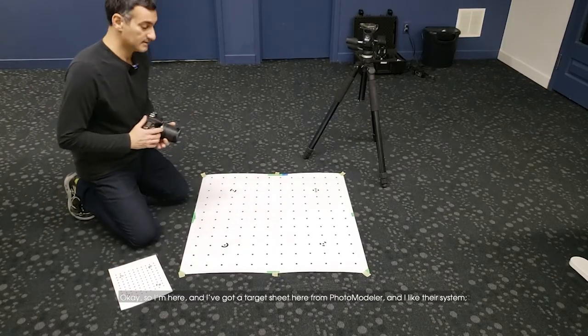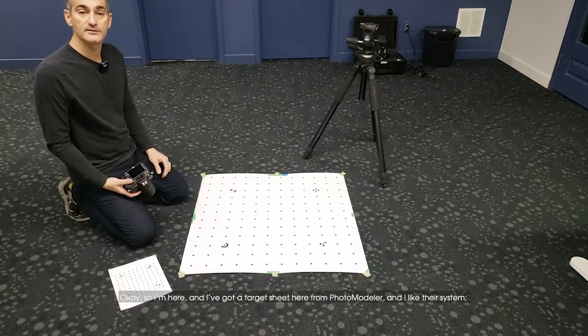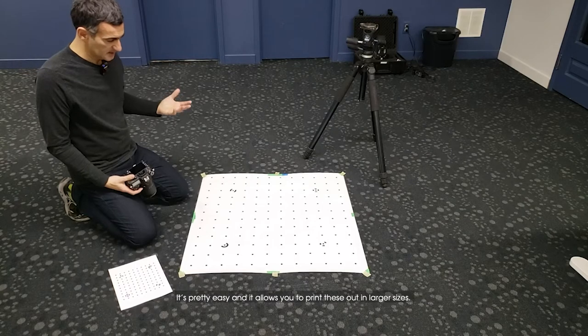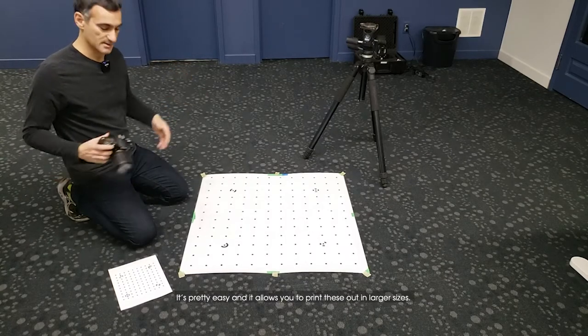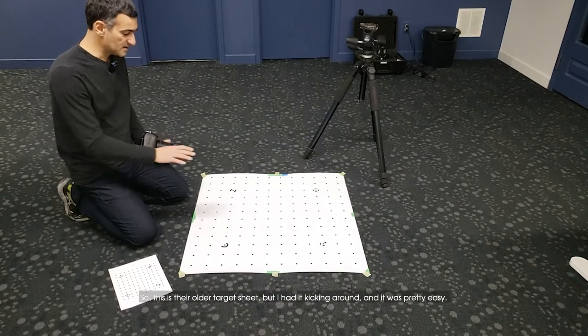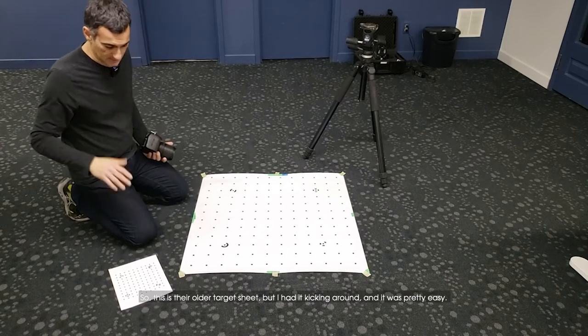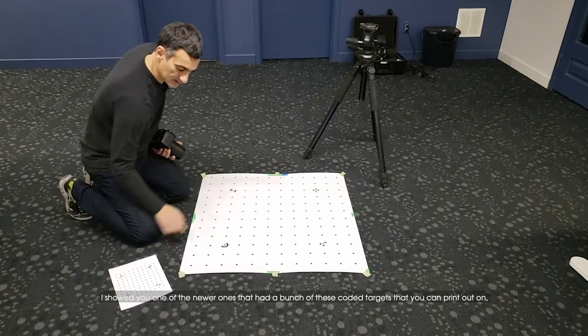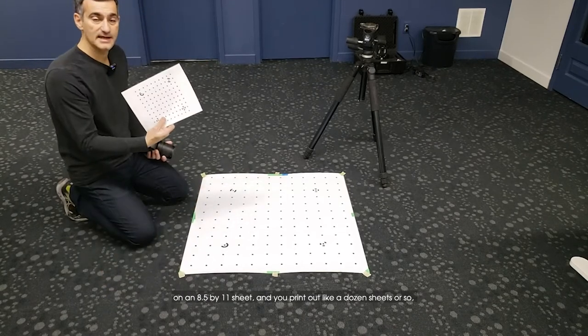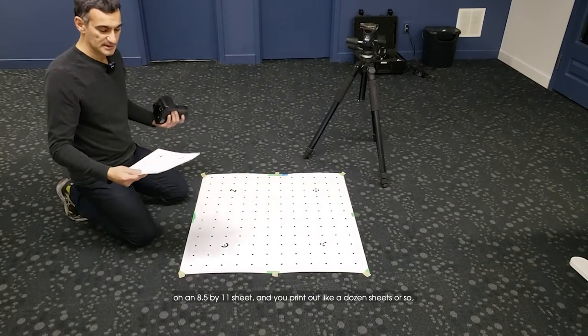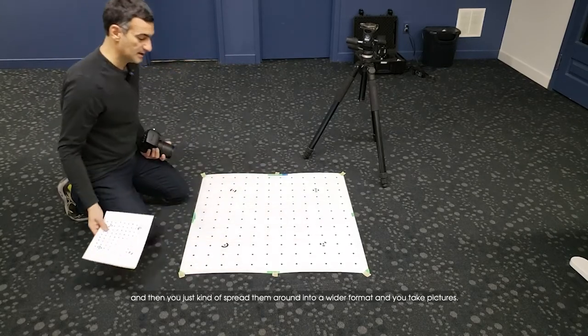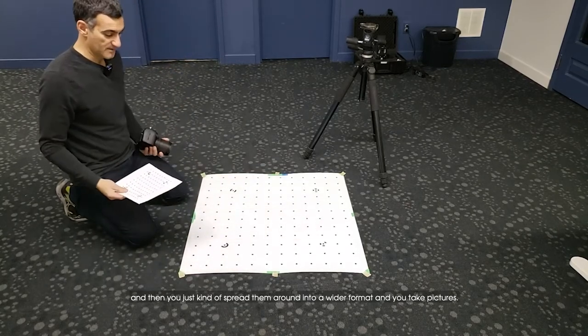I've got a target sheet here from PhotoModeler and I like their system. It's pretty easy and allows you to print these out in larger sizes. This is their older target sheet but I had it kicking around. I showed you one of the newer ones that had coded targets you can print out on 8.5 by 11 sheets. You print out a dozen sheets or so and spread them around into a wider format and take pictures.